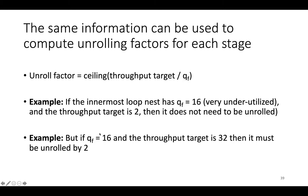On the other hand, if Q = 16 and the throughput target is 32, then it must be unrolled by 2 because there isn't enough capacity, resulting in 200% utilization at 32 pixels per clock cycle.